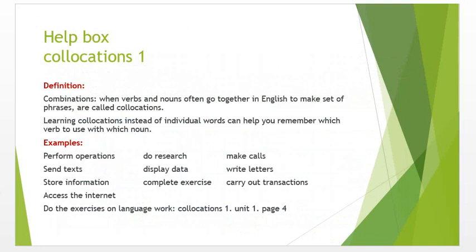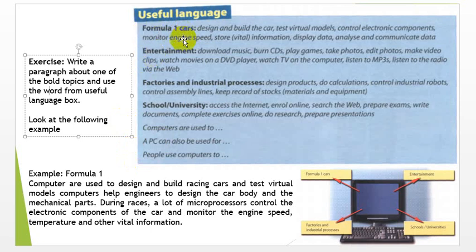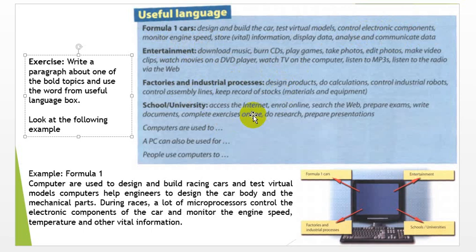After that we have useful language. Here is the guide: write a paragraph about one of the bold topics and use the words from the useful language box. Here we have the writing section and these are the topics: Formula One cars, entertainment, factories and industrial processes, schools and universities. These are the words that you can use in your paragraph: design and build a car, test virtual models, control electronic components, monitor engine speed. If you don't know any of the words, please look at your dictionary.